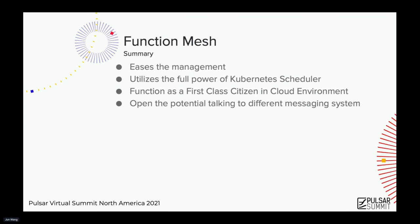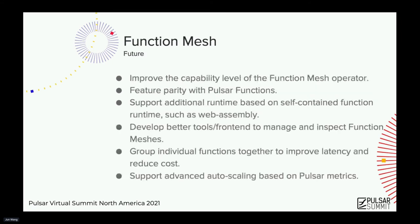Here comes the summary with the key benefits of Function Mesh. We built Function Mesh to ease the management of Pulsar functions when running multiple instances of functions together. Function Mesh utilizes the full power of the Kubernetes scheduler including deployment, scaling, and management. It also makes Pulsar functions run natively in the cloud environment, which leads to great possibilities as more resources become available in the cloud. Lastly, Function Mesh enables Pulsar functions to work with different messaging systems and to integrate with existing tools in the cloud environment, because Function Mesh runs Pulsar functions independently from the Pulsar cluster.